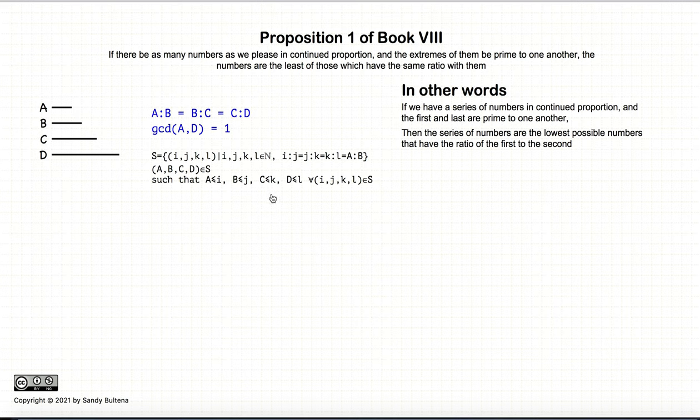So here is the mathematical notation for any mathematicians out there. But as we progress with this proof, you will see what is meant by having the least numbers. So again, this proposition states that we have four numbers in continued proportion, where the first and the last are relatively primed to each other, and if these two conditions are true, then A, B, C, and D are the least numbers that are in this ratio of A to B.